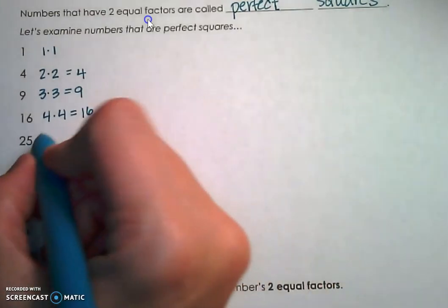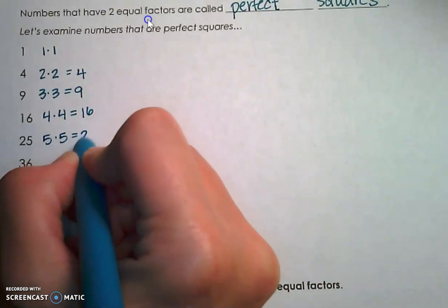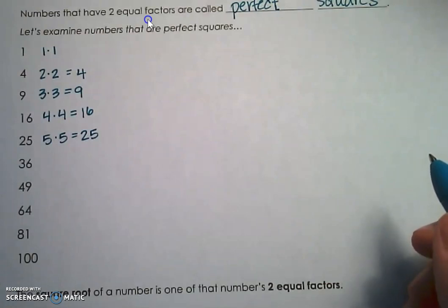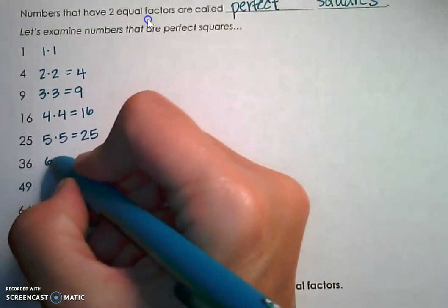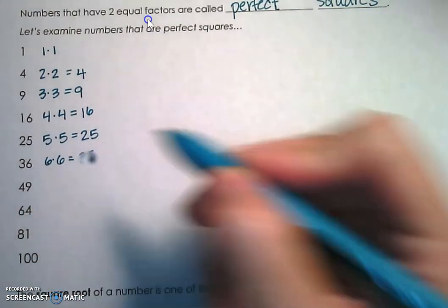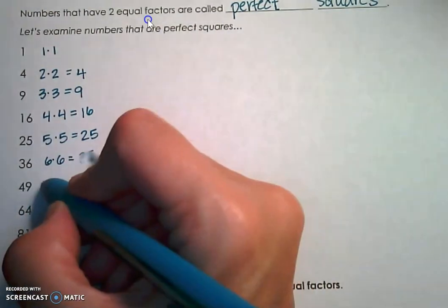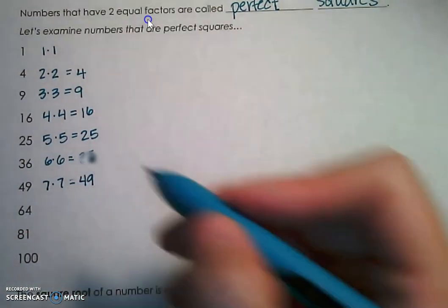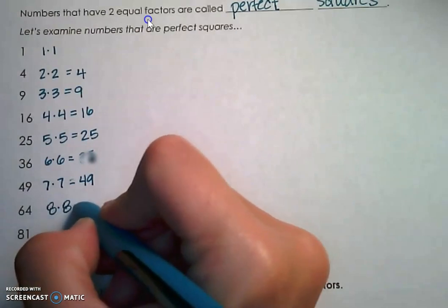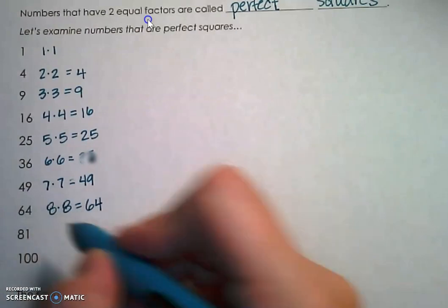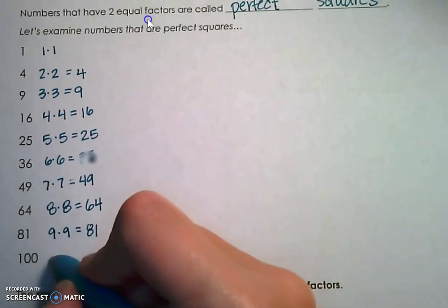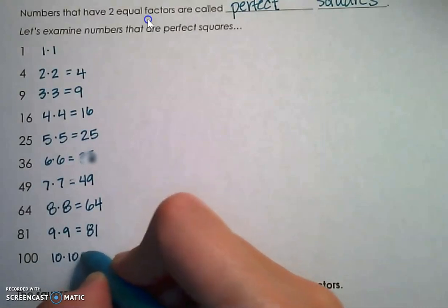25 is also a perfect square because 5 times 5 is 25. 36 has lots of other factors, but what makes it a perfect square is that it has two identical factors of 6. 49 is a perfect square because 7 times 7 is 49. 64 is a perfect square because 8 times 8 is 64. 81 is a perfect square because it has two equal factors of 9. And 100 is a perfect square because it has two equal factors of 10.